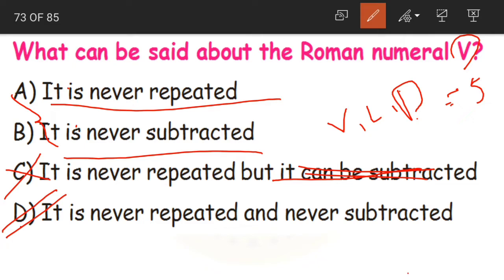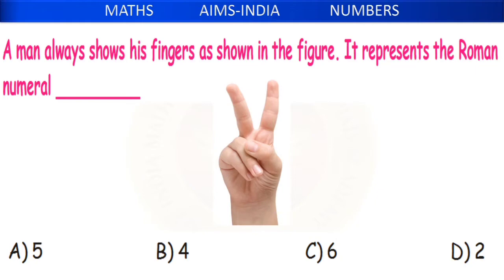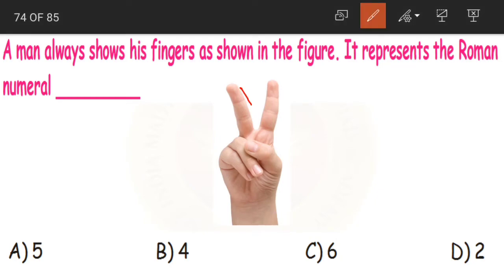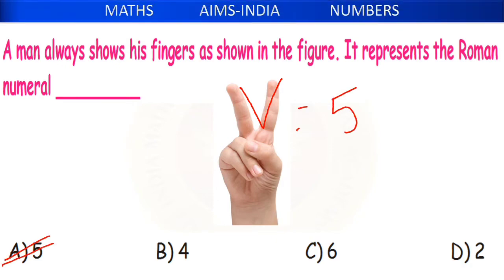Next: a man shows his fingers in a shape. The shape is like V. So what Roman numeral does it represent? V is equal to 5. These two fingers represent the Roman numeral 5 — option A.